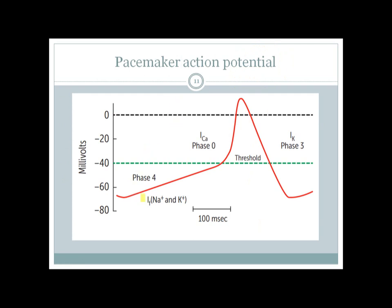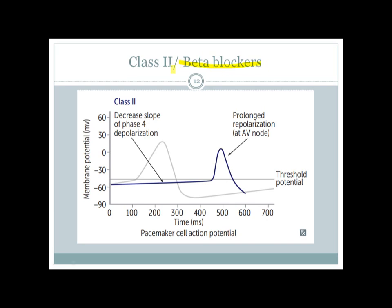Class 2 agents — beta blockers — act on phase 4 of the pacemaker action potential. They reduce the slope of phase 4, slowing the funny current depolarization. The normal pacemaker action potential shows a gradual phase 4 slope, which is significantly reduced after giving a class 2 agent, blocking the funny current of sodium and potassium. They also cause prolonged repolarization, especially at the AV node.